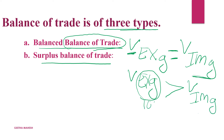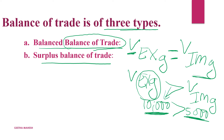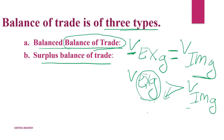For example, export of goods value is 10,000 rupees and import of goods value is 5,000 rupees. This gives a surplus. The extra benefit means cash will come in. Our receipts are 10,000 and payment is 5,000. In this situation, it is called a surplus balance of trade.